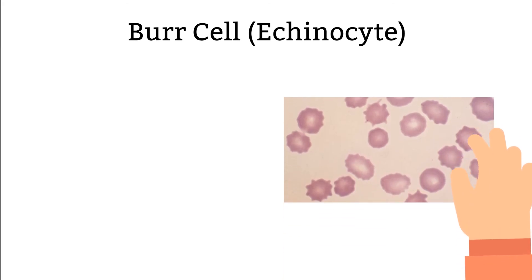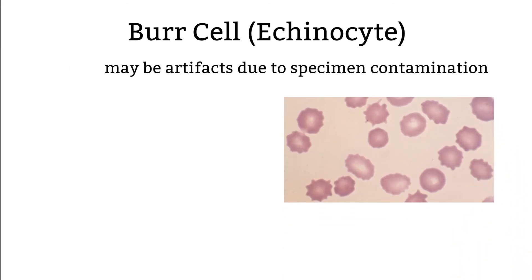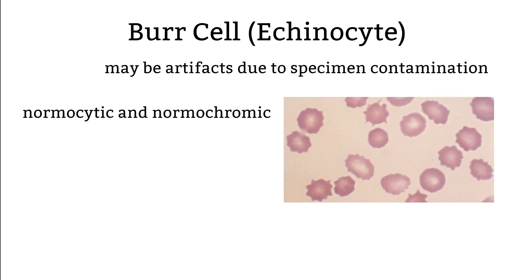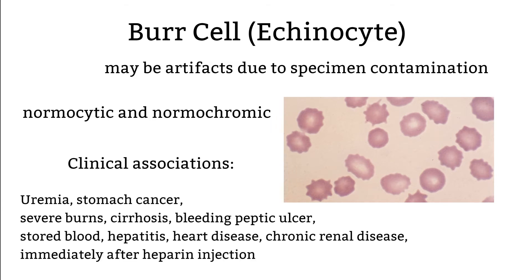Bird cells. Usually we only see a small number of bird cells, but if you find them in large numbers, they are usually artifacts due to specimen contamination. This type of cell is usually normocytic and normochromic. The shape could be caused by depletion of ATP, exposure to hypotonic solutions, and specimen contamination. Here are some diseases associated with this type of morphology.